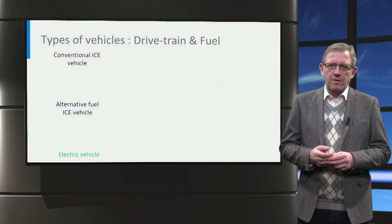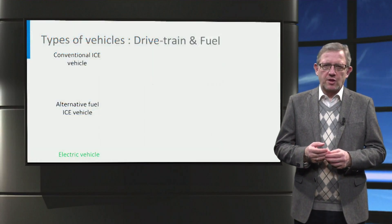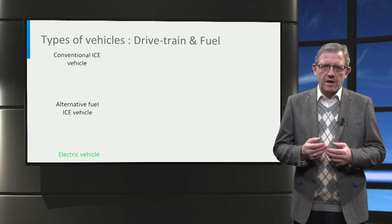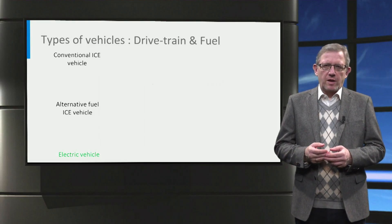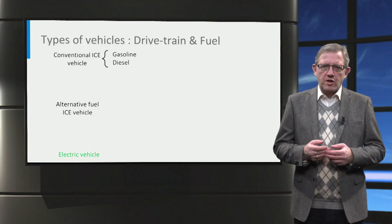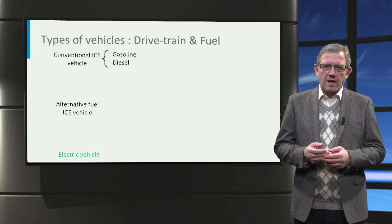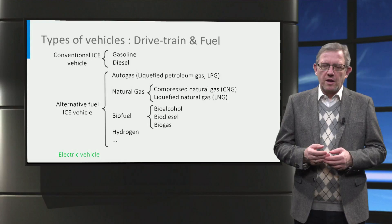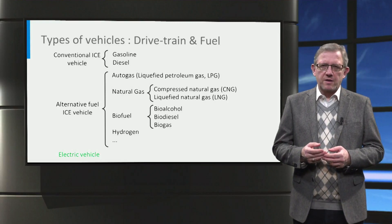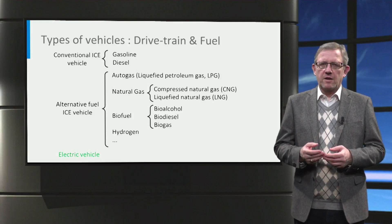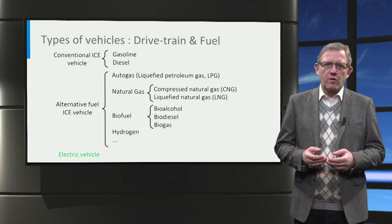Vehicles can be classified based on drivetrain and fuel type, such as the conventional internal combustion engine vehicle, the alternative fuel internal combustion engine vehicle, and the electric vehicle. The internal combustion engine is commonly referred to by its short name ICE. The conventional ICE vehicle includes gasoline and diesel vehicles. The alternative fuel ICE vehicle refers to vehicles that run on a fuel other than gasoline or diesel, like autogas, natural gas, biofuel or hydrogen.